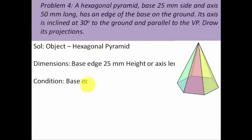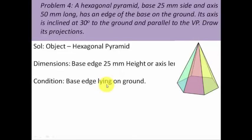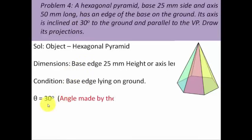There is a condition that an edge of the base is on the ground, so in your drawing you must ensure that one edge of the base always remains in absolute contact with the horizontal plane. This condition should reflect perfectly in the drawing. The next condition is the inclination the axis makes with the ground — theta axis has been given as 30 degrees.